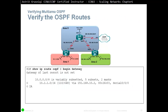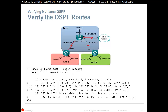To verify OSPF routes: 'show ip route ospf'. We can see we are learning two intra-area networks — 10.2.1.0, which is the network on Router 2, and 192.168.10.4. We are also learning two inter-area networks from another area: 192.168.10.x and 192.168.20.x.